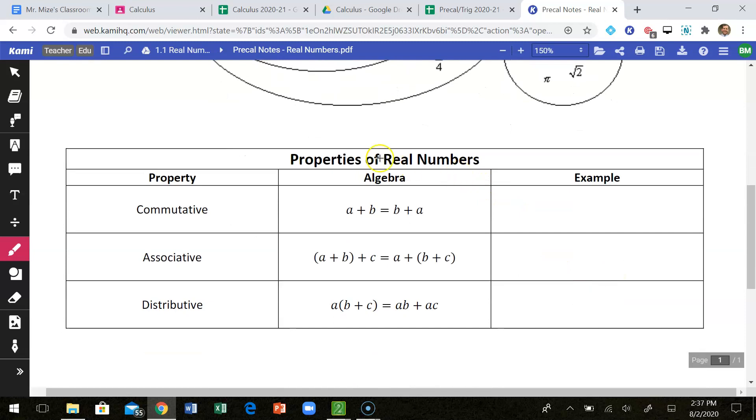And then the only other thing I want to talk about in this video are some properties of real numbers. And these are properties that you should know. The commutative property of addition says if I add any two numbers together, it does not matter in which order I add them. So an example here would be something like 2 plus 3 is the exact same as 3 plus 2. Both of those equal 5. That is the commutative property.